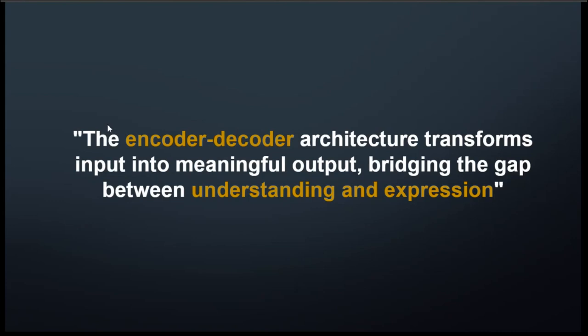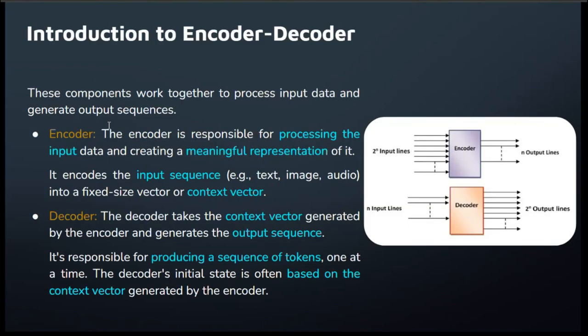The encoder and decoder architecture is the magic wand that transforms the whole input into a meaningful output — it's like a computer not just understanding what we are saying but also replying in a way that makes sense. In the introduction, we introduce our star performers: the encoder and decoder. They are a dynamic duo that works seamlessly to process input and output in a sequential and relevant manner.